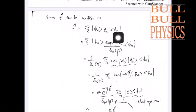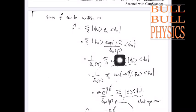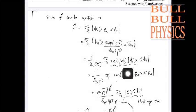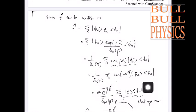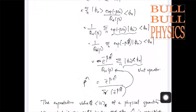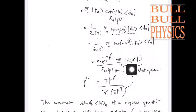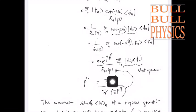Since ρ can be written in this form, for the canonical ensemble I am taking ρ_n = exp(-β E_n) / Q_N(β). So this will be 1/Q_N(β) times Σ_n exp(-β E_n) |φ_n⟩⟨φ_n|. Now Σ_n |φ_n⟩⟨φ_n| equals 1 — a result from quantum mechanics — so we are left with exp(-β H) / Q_N(β).